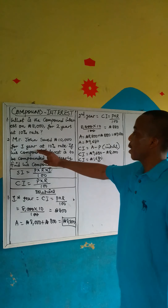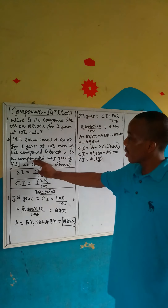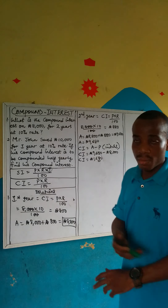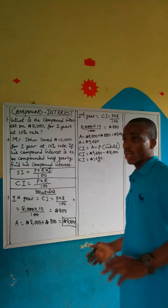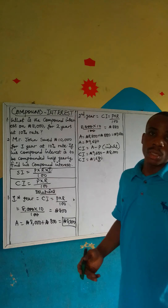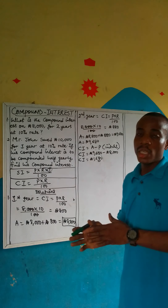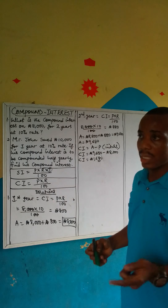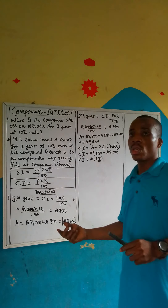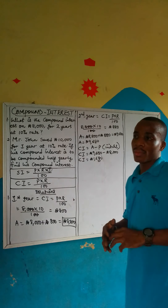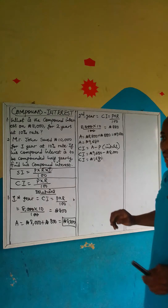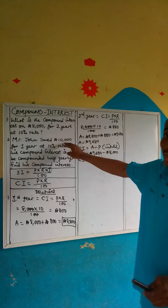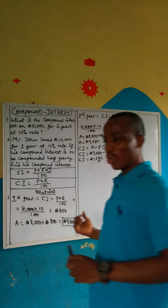Now question two: Mr. John saved 10,000 for one year at 10% rate. If his compound interest is compounded half yearly, find his compound interest. Half yearly means one year is divided into two: the first six months and the second six months. We get the interest for each six-month period and divide by two, since it is compounded half yearly. Then we subtract the total from the initial principal of 10,000.